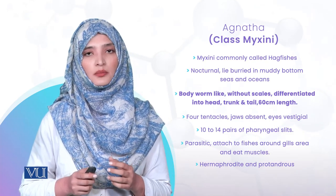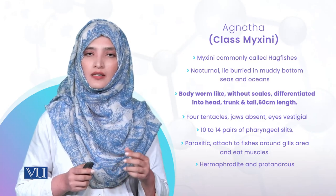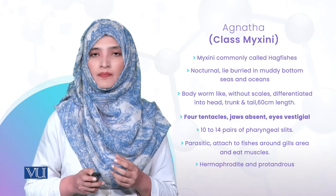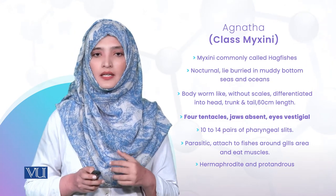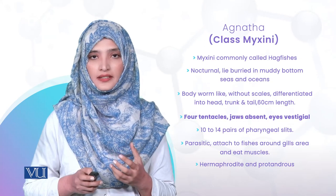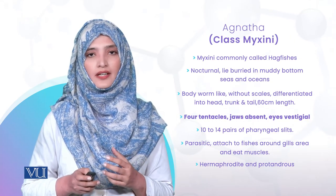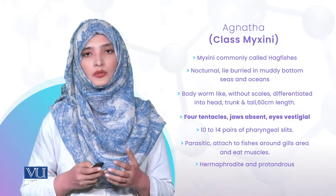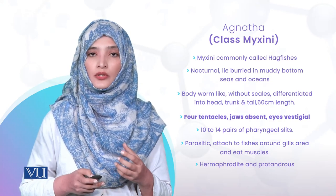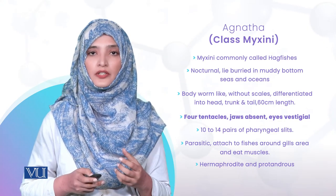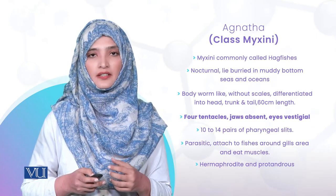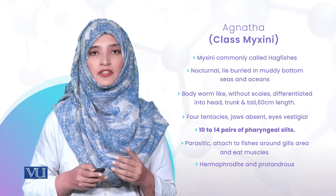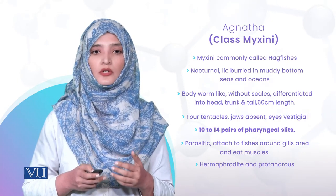Almost 60 cm یہ fishes long ہوتی ہیں۔ Head region میں jaw-less ہیں کیونکہ یہ Agnathans ہیں۔ ان میں vestigial eyes ہوتی ہیں کیونکہ یہ bottom dwellers ہیں اور اس وجہ سے photoreceptors reduce ہو جاتے ہیں۔ چار tentacles ہیں جو mouth کے ساتھ attached ہوتے ہیں، یہ sensory organs ہیں۔ Trunk region میں pharyngeal slits ہیں، almost about 10 to 14 pairs۔